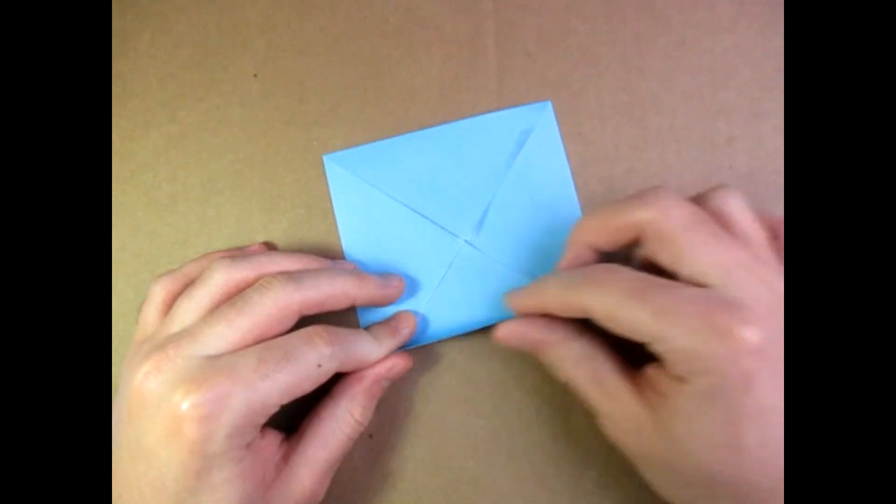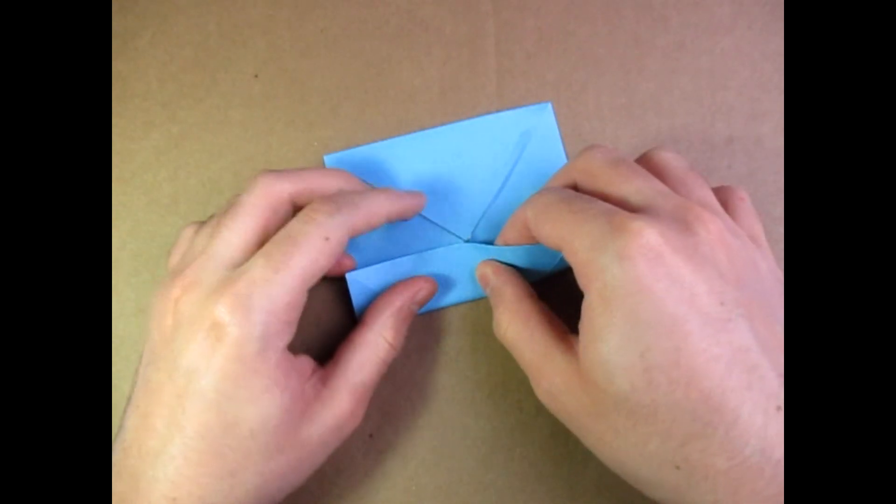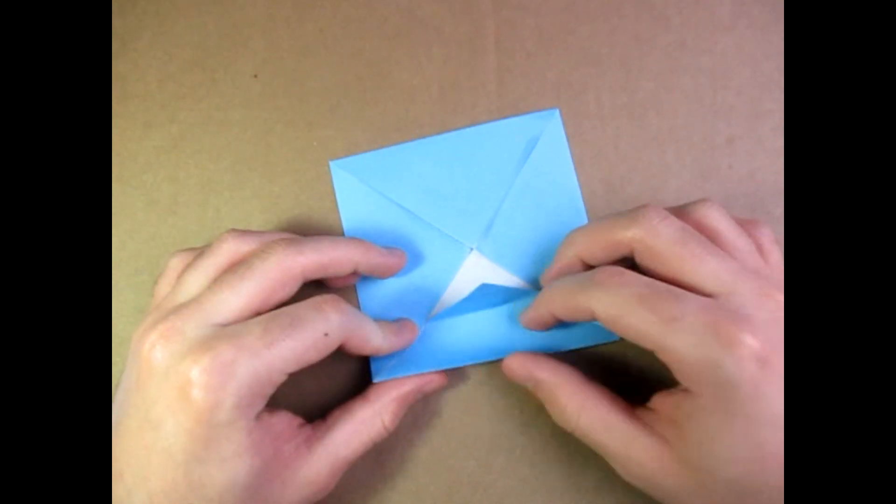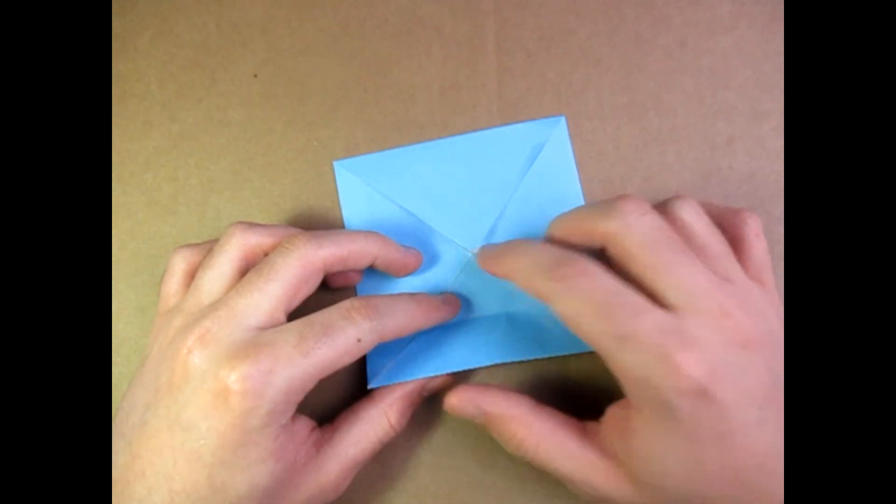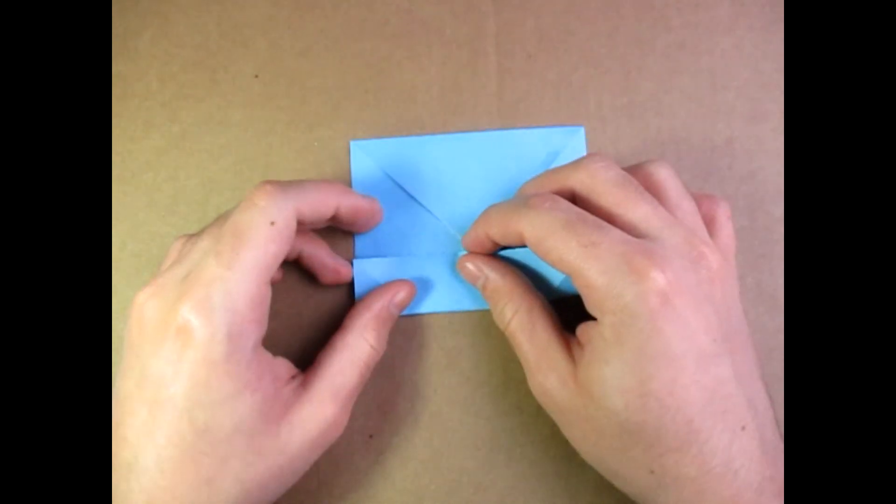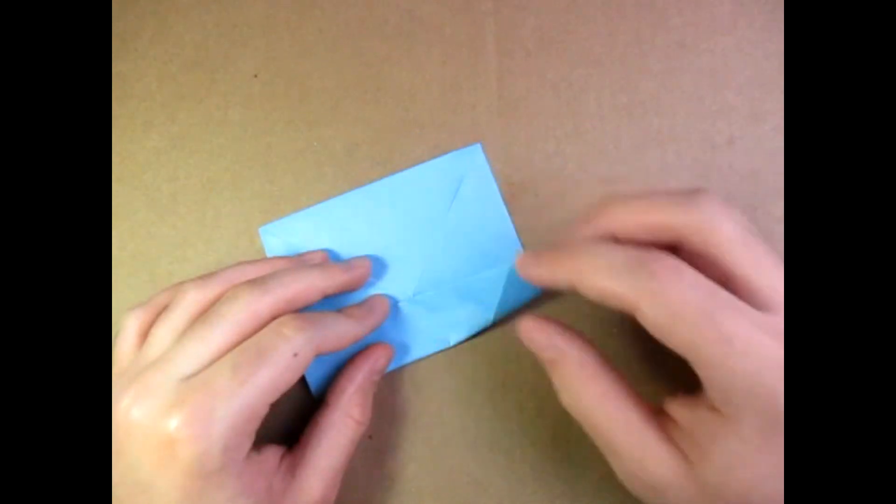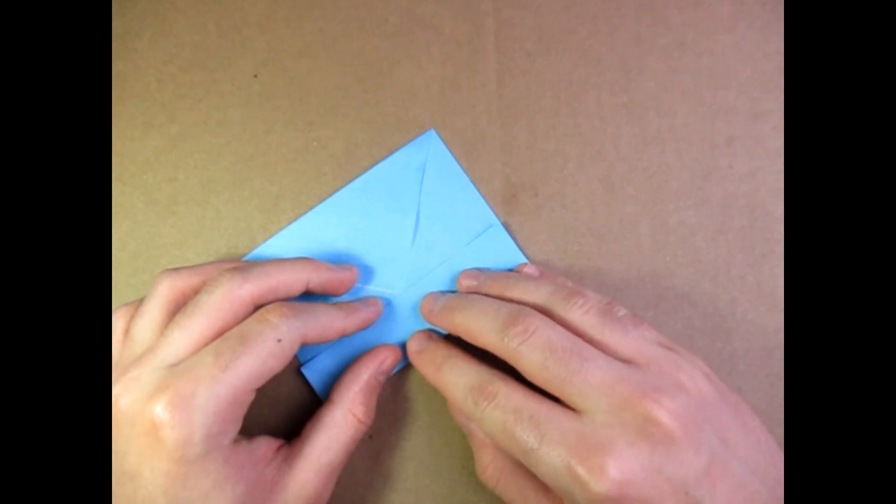Alright, so now what we're going to do is we're going to take this edge and fold it up. How far? Well, you want to fold it up so that this edge right here touches the middle right there, and the edges align on the sides. Yeah, just like that.